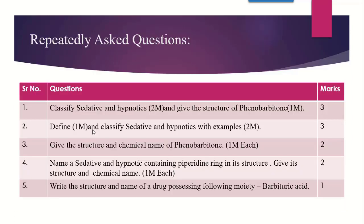The first question is a general question: classify Sedative and Hypnotics. This classification question is really very common and important from the exam point of view, coming generally for 2 marks or separately for 3 marks. Along with that, one adjoint question asks for the structure of Phenobarbitone — a barbituric acid derivative we will study under the classification of Sedative and Hypnotics. The structure carries 1 mark, making a total of 3 marks.